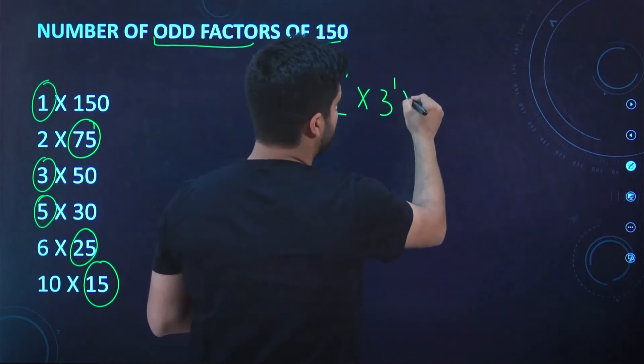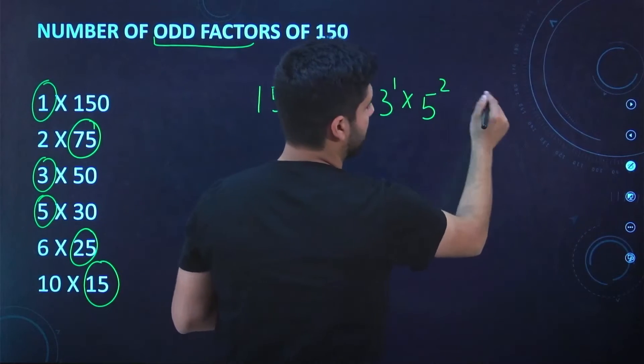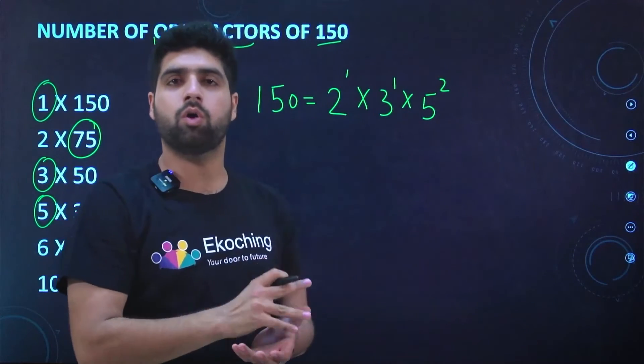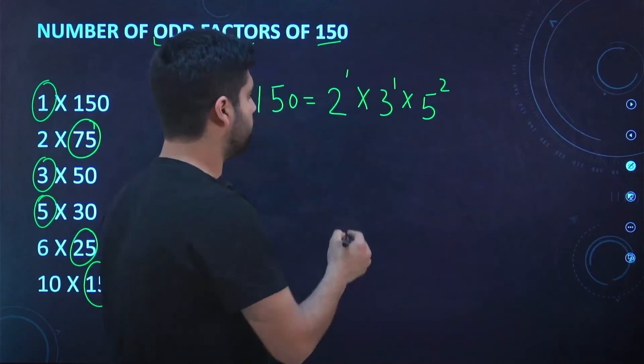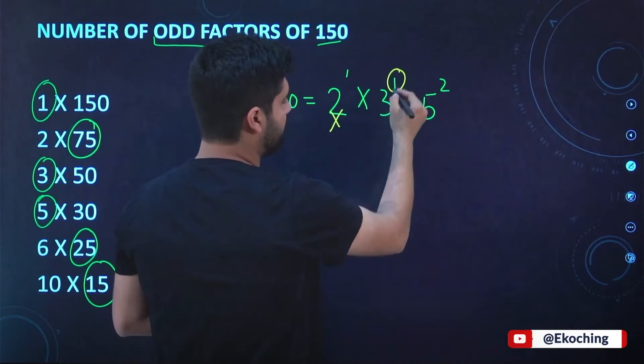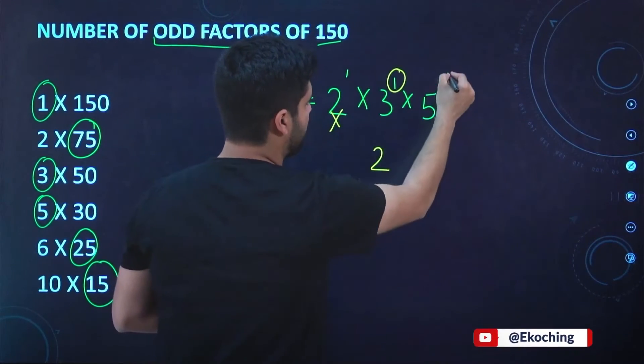2^1 × 3^1 × 5^2. And as we know, 2 is the only even prime number, so it will be skipped from here. And the rest of the prime numbers' powers will be increased by 1, so